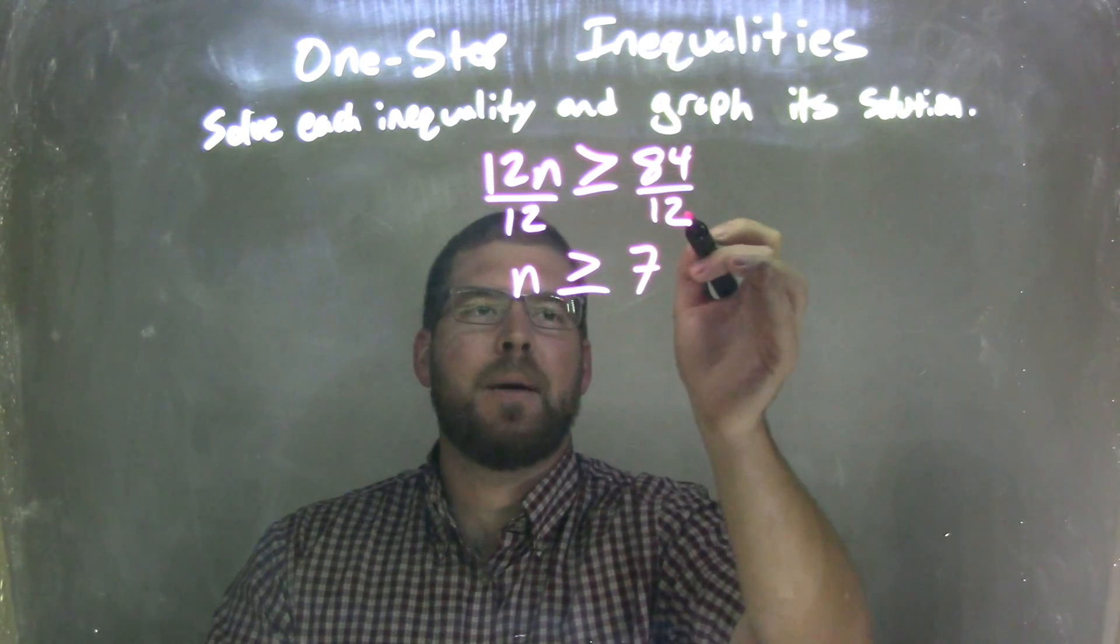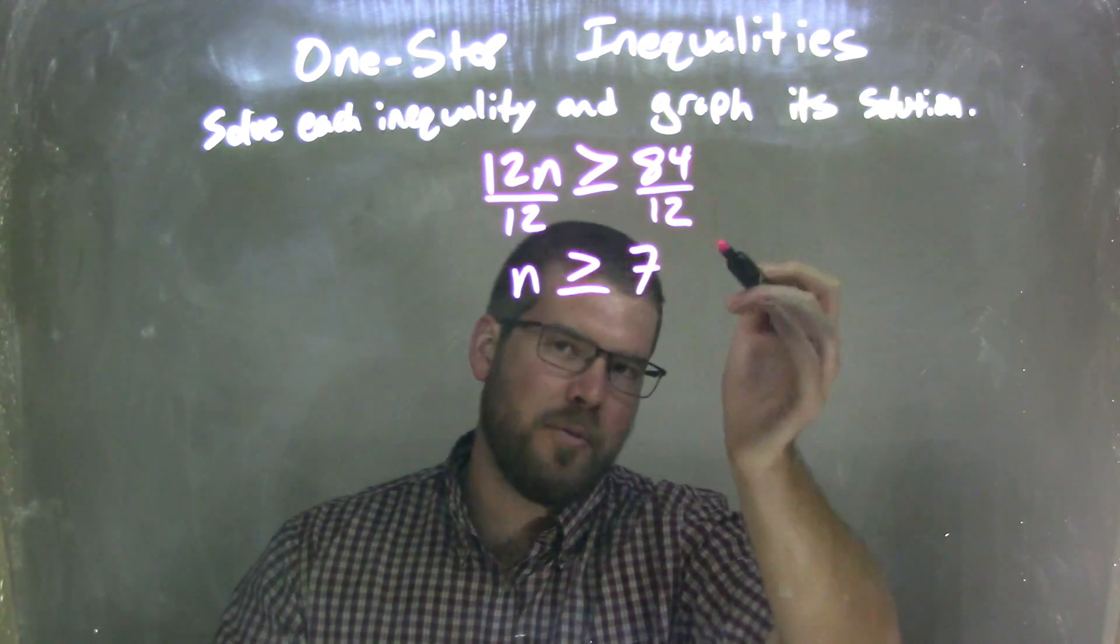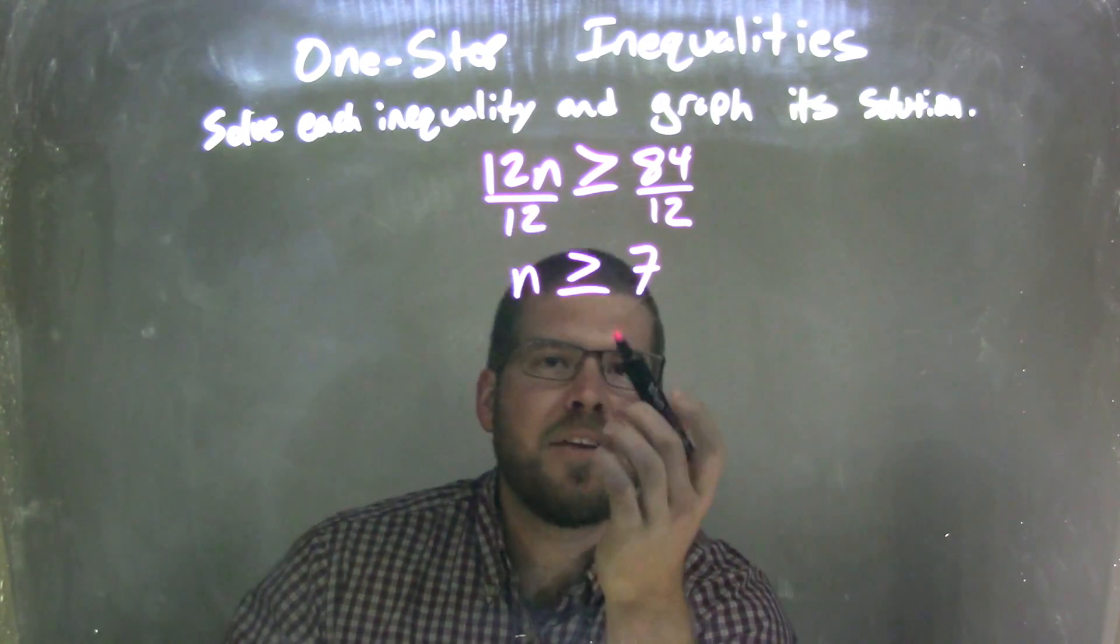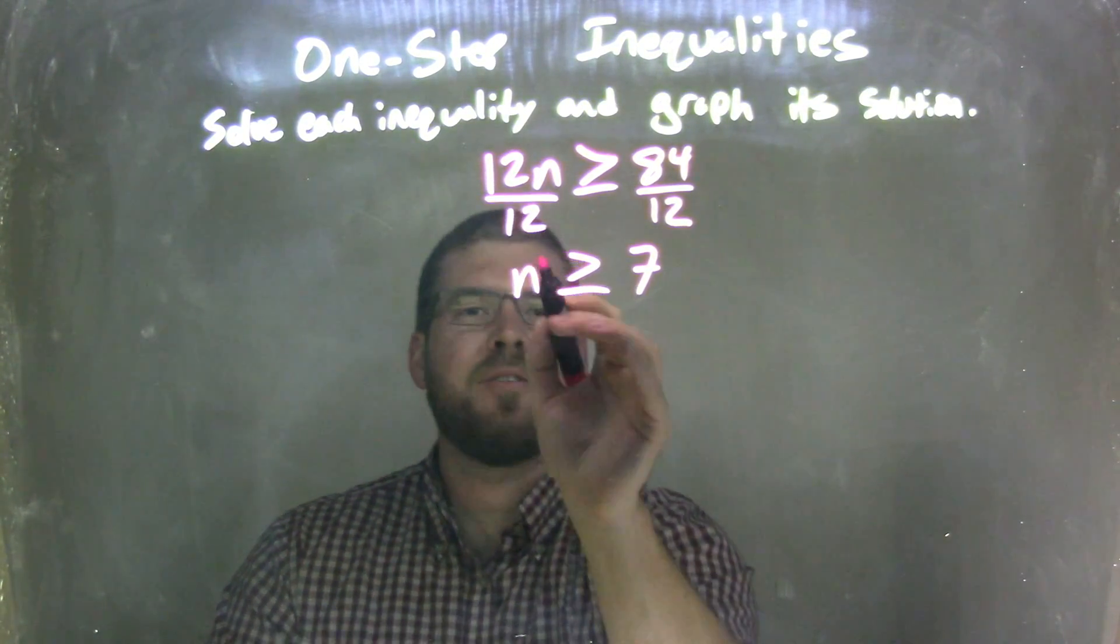So 84 divided by 12 is 7, because 7 times 12 is 84. And now n is isolated. It's greater than or equal to 7, and we have our final answer.